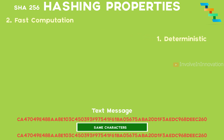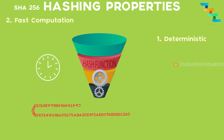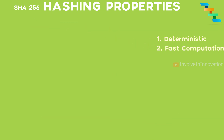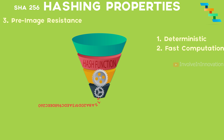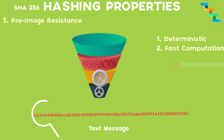The next property is that the hash function must return the output as quickly as possible. The next property is preimage resistance. That is, it must be infeasible to determine the input string from the output hash string. This is called preimage resistance.